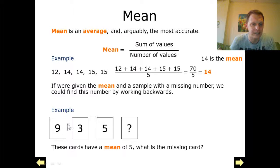So for example we've got these cards just here. We have 9, 3, 5 and the missing one, and we're told that the mean is 5 and we've got to find out what that missing card is.